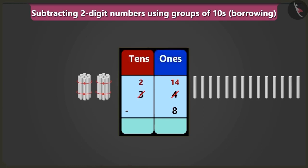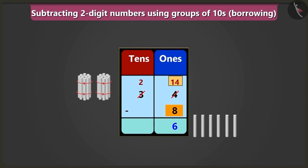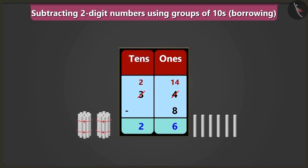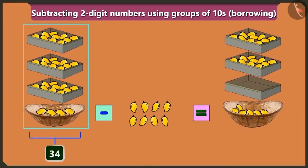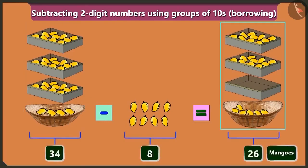Now, if we subtract 8 from 14 in the place of ones, then it will be 1, 2, 3, 4, 5 and 6 left. So we will write 6 in the place of ones. Now we will have two 10s in the place of tens — so the answer will be 26. Yes, so this way, 34 minus 8 equals 26 mangoes.